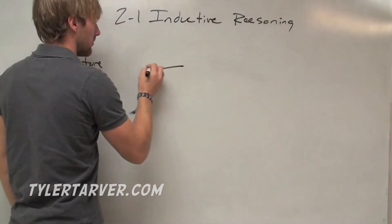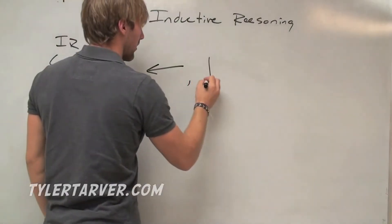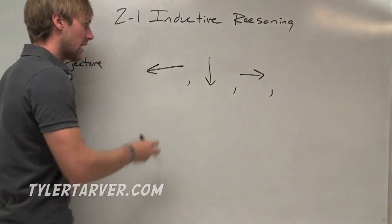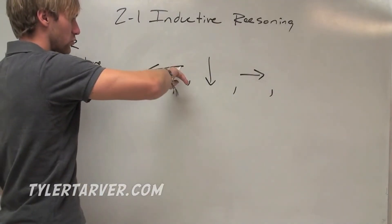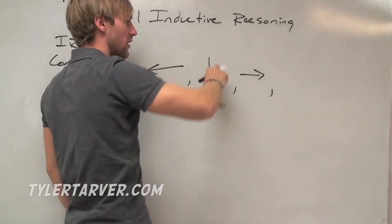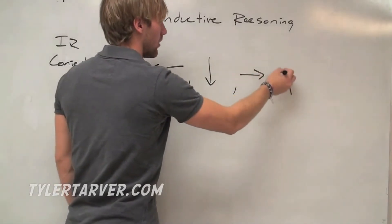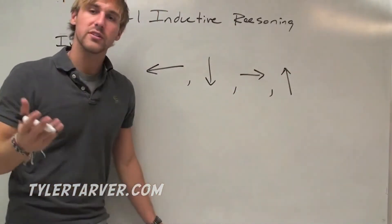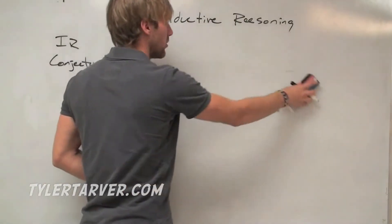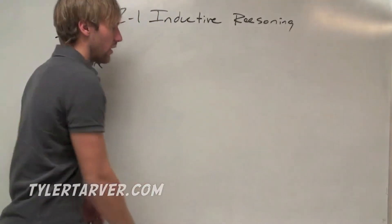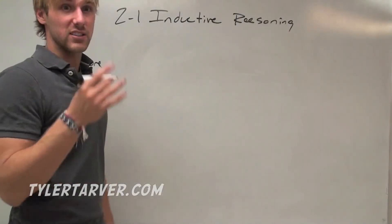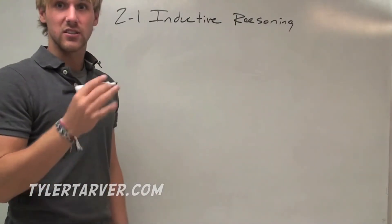Here's another example with arrows pointing in different directions. You have an arrow going one way, then another way, then another way. Look at what's happening with the pattern of directions, and you can usually figure out which way the next arrow is going to point. Don't get overwhelmed — just look at the pattern.